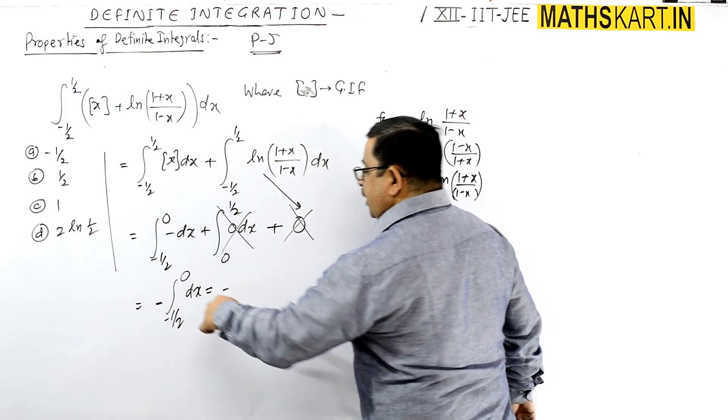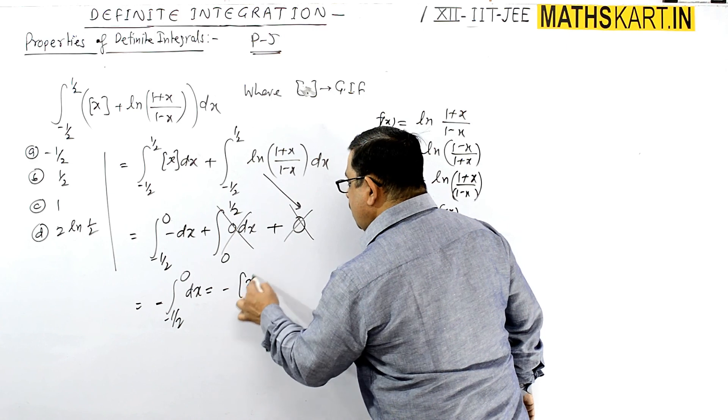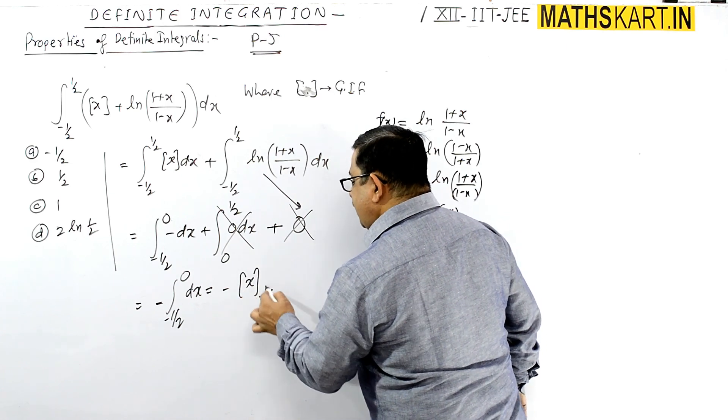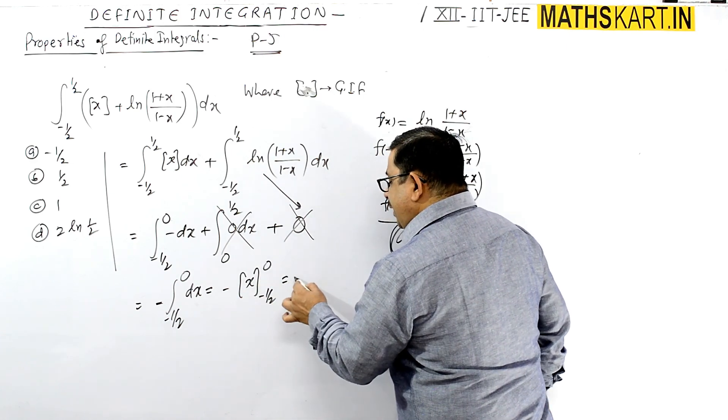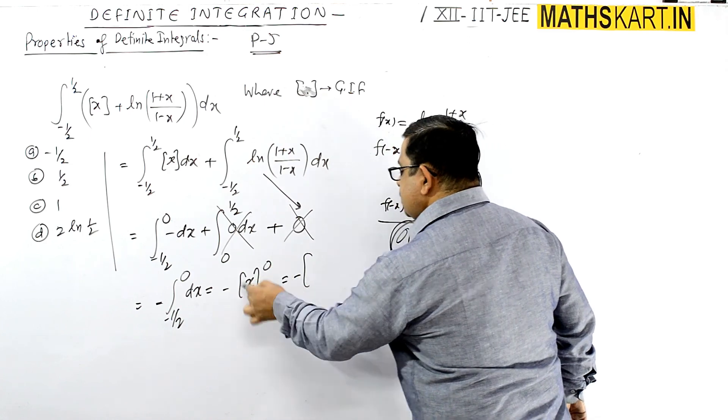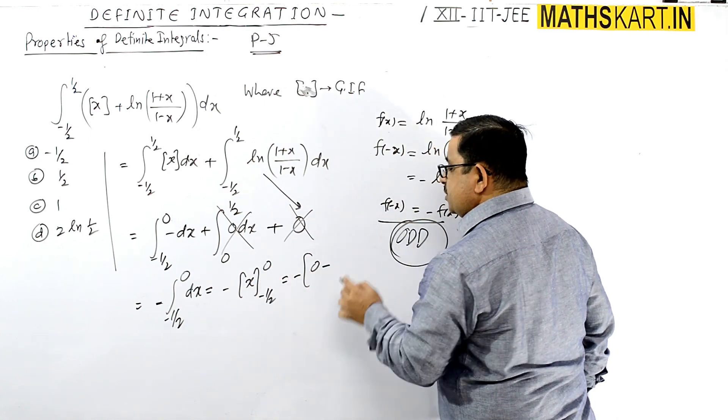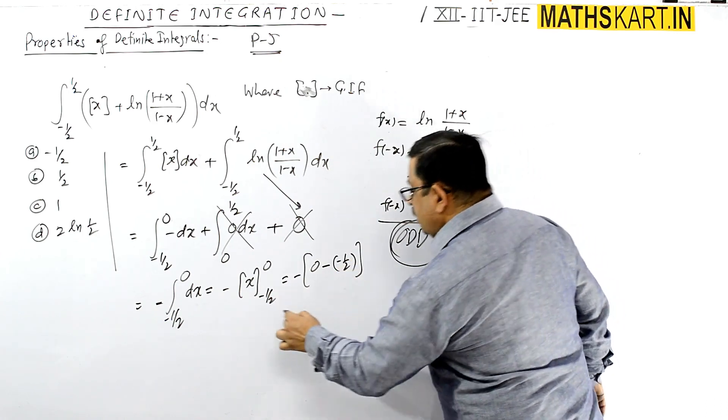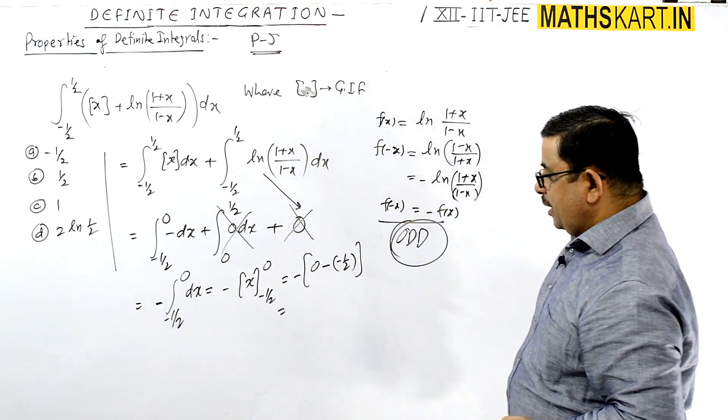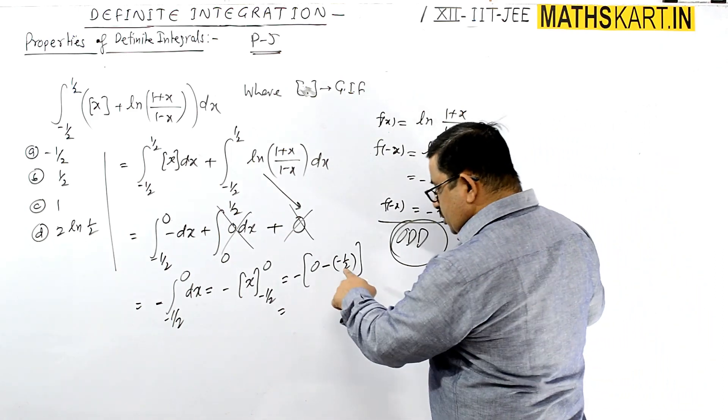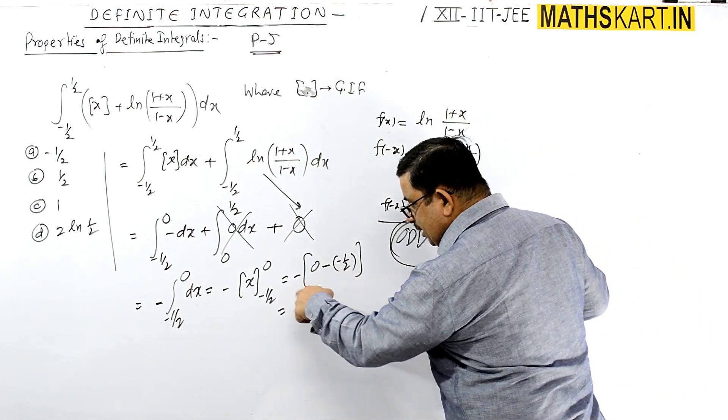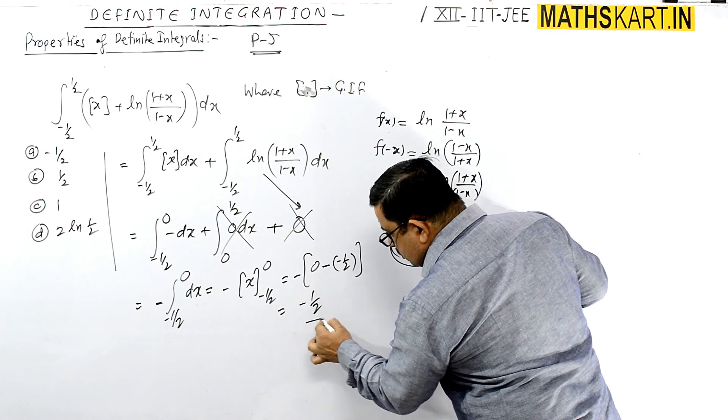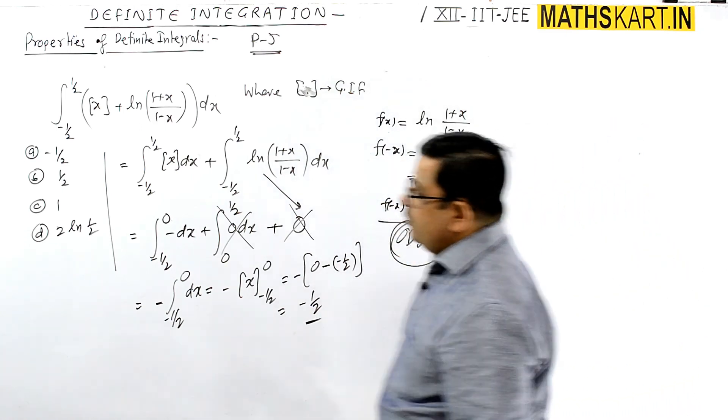Only the first portion remains: -1 times integral from -1/2 to 0 of dx. Integrating gives -x evaluated from -1/2 to 0, which equals -(0 - (-1/2)) = -1/2. So the answer is -1/2.